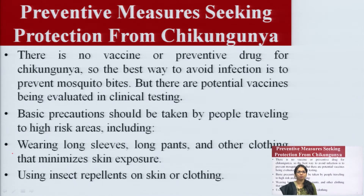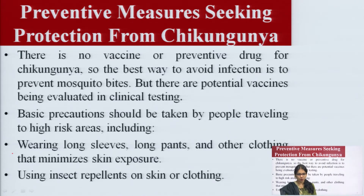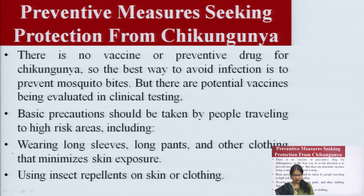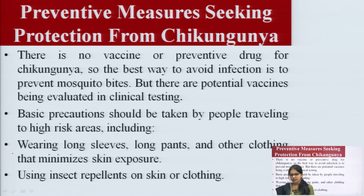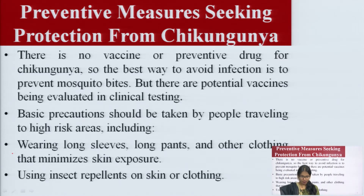Regarding transmission and prevention from Chikungunya: it is mostly transmitted to humans through the bite of an infected mosquito of the genus Aedes — specifically Aedes aegypti and Aedes albopictus. Signs and symptoms include high fever, joint pain, rashes, headache, nausea, and fatigue.